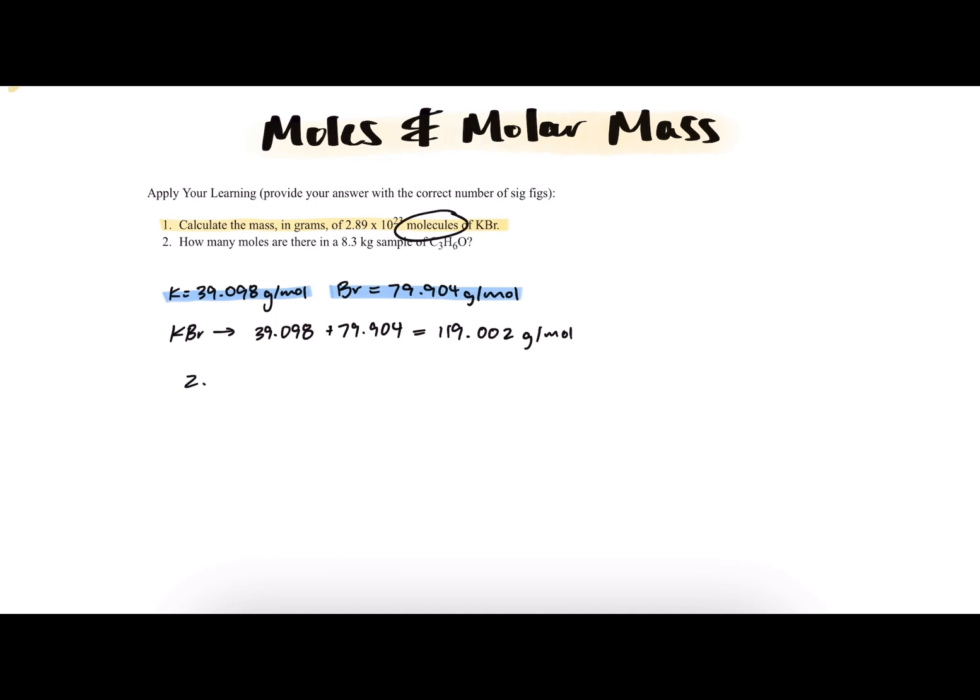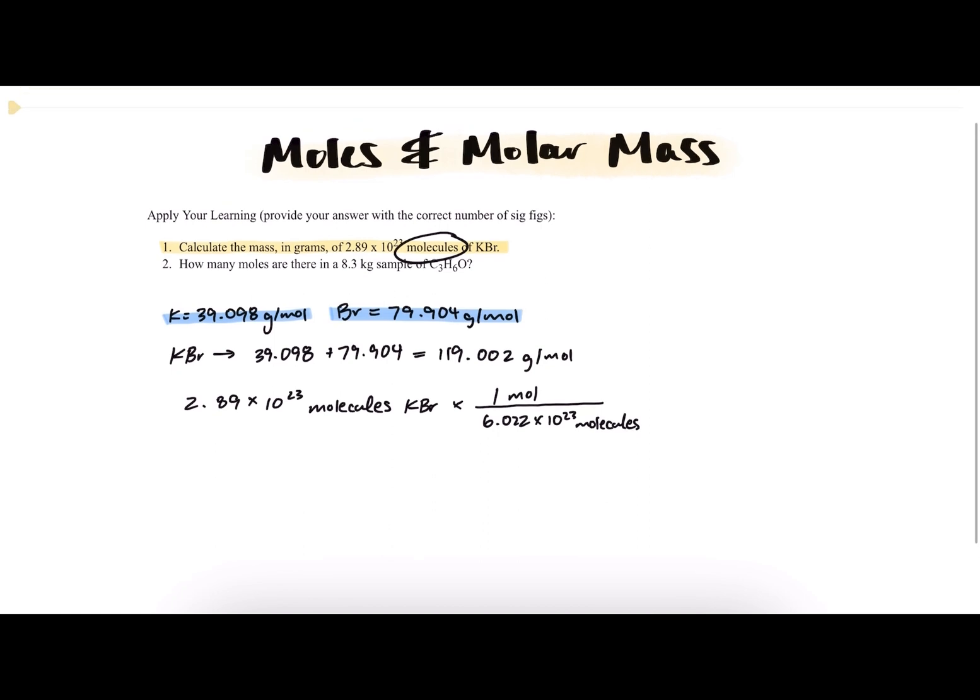So we can do that by doing a conversion with Avogadro's number. We can start with our number of molecules and multiply that by our conversion factor. We know that one mole is equivalent to 6.022 times 10 to the 23 molecules or units, and this will be one mole of KBr in this case.